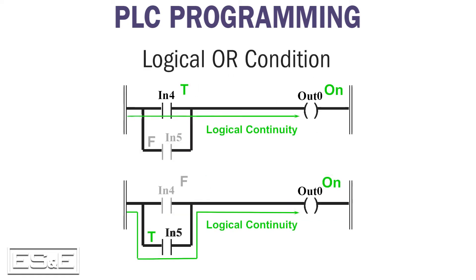These rungs show the logical OR condition. In the top rung, input four is true, so the result is true and the output is on. Input five is off, but it has no effect on logical continuity because the PLC scans from left to right, top to bottom. Conversely, the lower rung shows input four as false, so the scan drops to the branch containing input five. Because input five is true, the rung solves true, and the output is on. Once again, the scan is left to right, top to bottom.